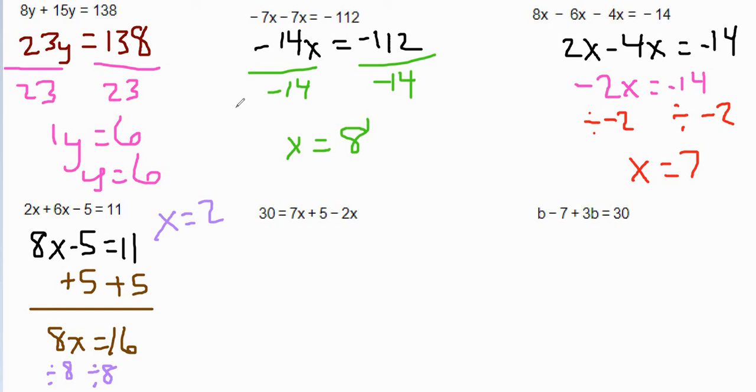Next one we have 30 equals 7x plus 5x minus 2x. I'm going to combine like terms first, which is the 7x and the negative 2x. Be careful, it's not 9x. But 7x minus 2x is going to be 5x. So we have 30 equals 5x plus 5.